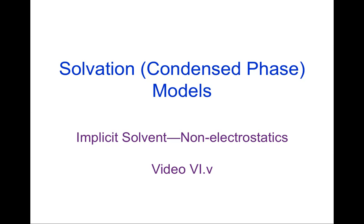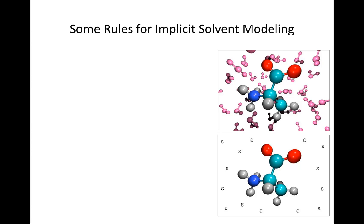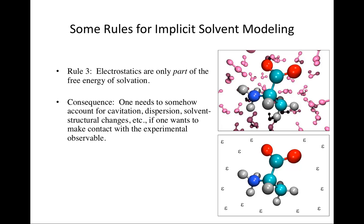With the details of electrostatics firmly under our belts for implicit solvent models, now is the time to take a look at non-electrostatic components of the solvation free energy and the models that are used to compute them. I'm going to come back to my rules and offer my last rule about modeling. We've already talked about erasing solvent structure and leaving behind a dielectric constant when it comes to implicit solvents, but electrostatics are only part of the free energy of solvation, and we really need to have some means to account for cavitation, dispersion, and solvent structural changes if we want to actually make a comparison to the full experimental observable.